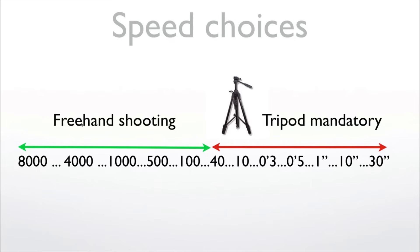From 1/8000 down to about 1/40 of a second, you can shoot freehand — you don't need a tripod. That's usually daytime conditions where you have plenty of light. But when the shutter speed goes below 1/40 of a second, you need a tripod. Some very professional photographers can go down to 1/30 or 1/10 of a second without a tripod, but it takes training. Take 1/40 as your safe threshold — go below that without a tripod and your photo will be blurry.